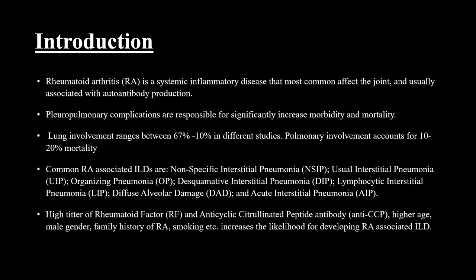Rheumatoid arthritis is a systemic inflammatory disease most commonly affecting the joints and usually associated with autoantibody production. Pleuropulmonary complications are responsible for significantly increased morbidity and mortality. Lung involvement ranges between 6.7 to 10 percent in different studies, and pulmonary involvement accounts for 10 to 20 percent mortality.